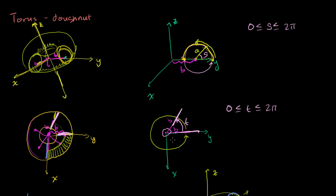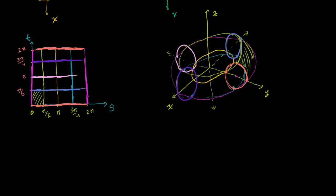We defined our second parameter t, which tells us how far the entire circle has rotated around the z-axis. Those are our two parameter definitions. Here we tried to visualize what happens — this is the domain that our parameterization is defined on. s goes between 0 and 2π, so when t is 0 we haven't rotated out of the zy plane. When t goes to 2π, we've rotated around the z-axis, and a line in our st domain corresponds to a circle in x, y, z space. Given that visualization, let's define a position vector-valued function that represents this parameterization.